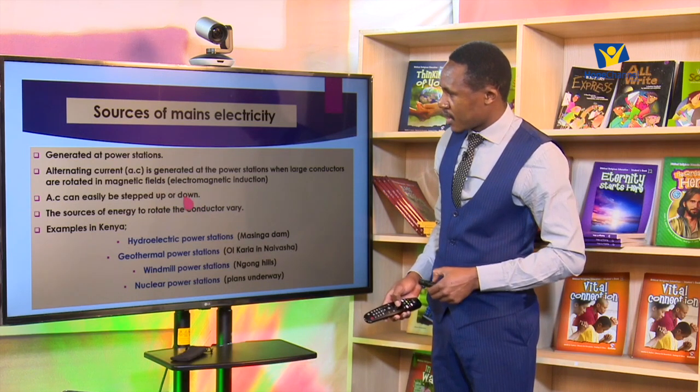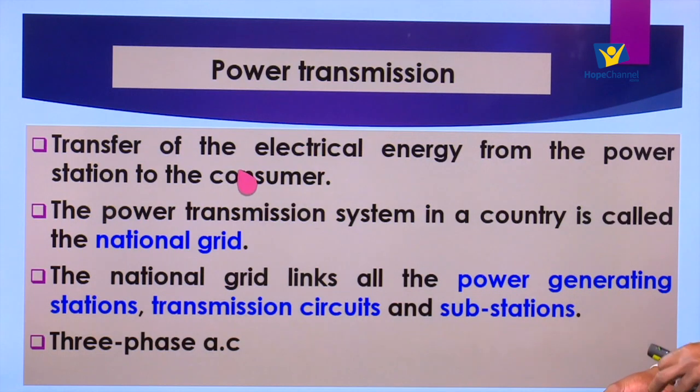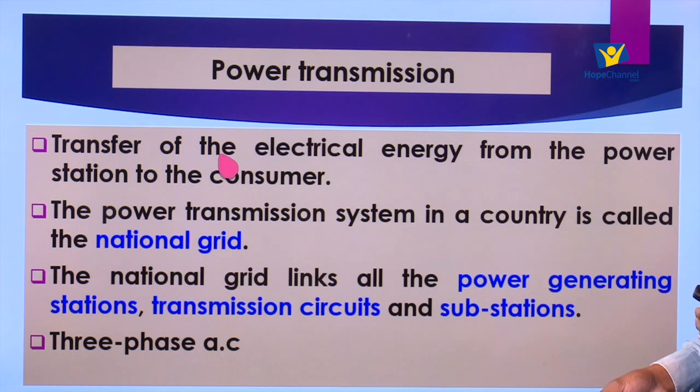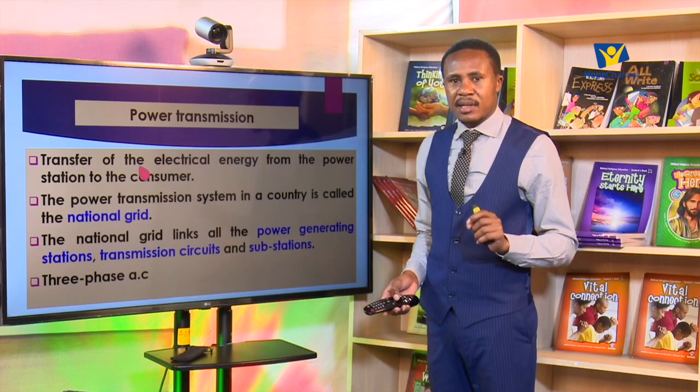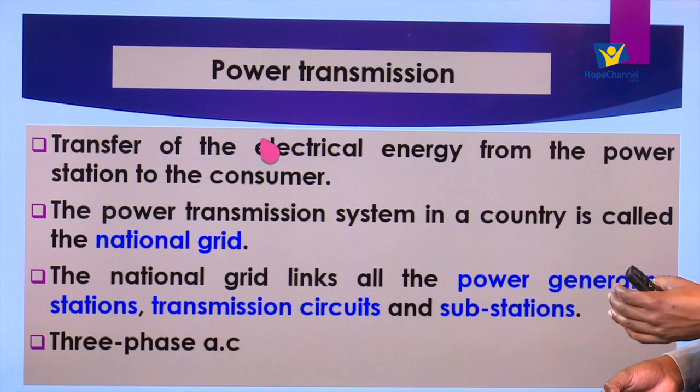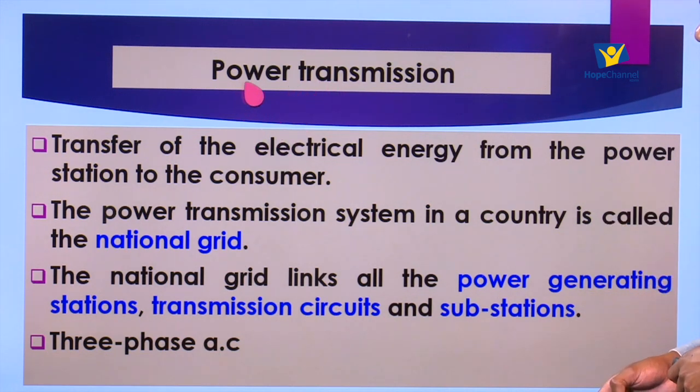Once generation takes place at the power stations, something else happens. The mains is going to be used by a consumer located some distance away from the power plant. For example, once generation takes place at Olkaria, the consumers are not only the people around Olkaria — we have people as far as Nairobi and other places in Kenya. So after generation we talk about transmission: the transfer of electrical energy from the power station to the consumer.